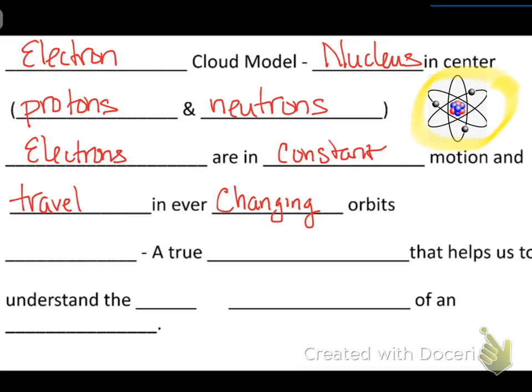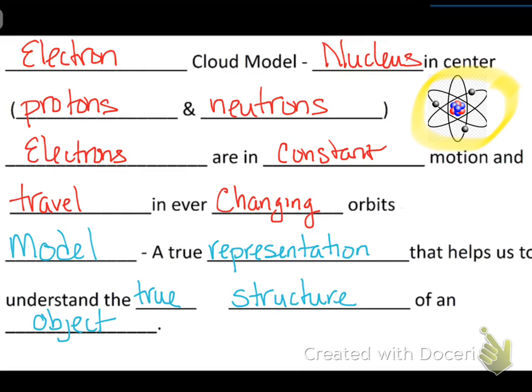And then as we're talking about models, let's review what a model actually is. A model is a true representation that helps us to understand the true structure of an object. So, we're going to label a model of an atom so we can start to see the parts. And you're going to have to know this. So, make sure you label it correctly and label it well so that, and clearly, so that you have this for future reference.